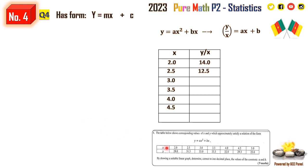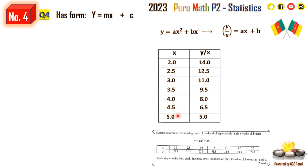Then we have 33 divided by 3, which is 11.0. We have 33.3 divided by 3.5, which gives approximately 9.5. Then 32 divided by 4, which is 8.0. Then 29.3 divided by 4.5, which gives us 6.5. And the last one, 25 divided by 5, which is equal to 5.